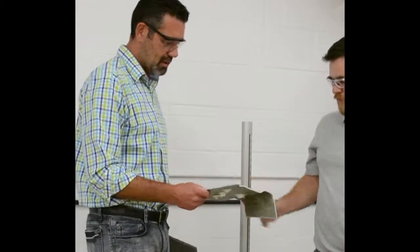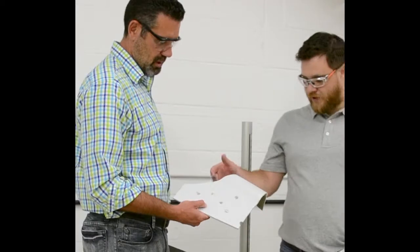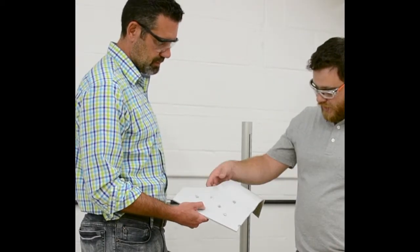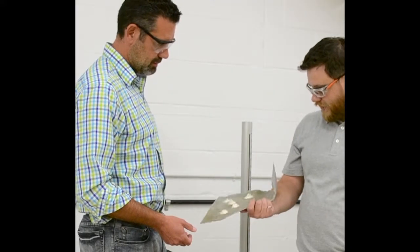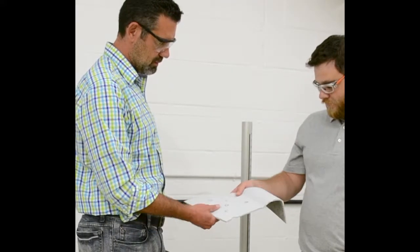This is the FRP now, and this also went through. Yeah. So this is FRP, our hand laid up fiberglass. And as you can see, the punch went directly through that as well and blew out fiberglass and resin on the back.